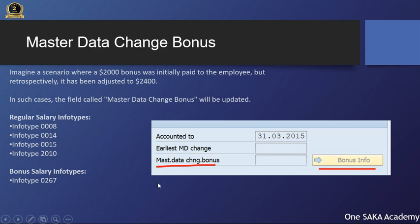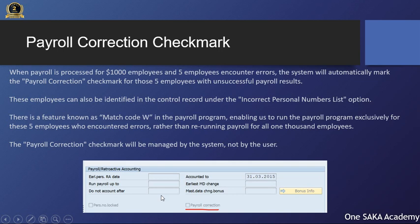When payroll is processed for 1,000 employees and 5 employees encounter errors, the system will automatically mark the payroll correction checkmark for those 5 employees with unsuccessful payroll results. These employees can also be identified in the control record under the incorrect personal numbers list option. There is a feature known as Match Code W in the payroll program, enabling us to run the payroll program exclusively for these 5 employees who encountered errors, rather than re-running payroll for all 1,000 employees. The payroll correction checkmark will be managed by the system, not by the user.